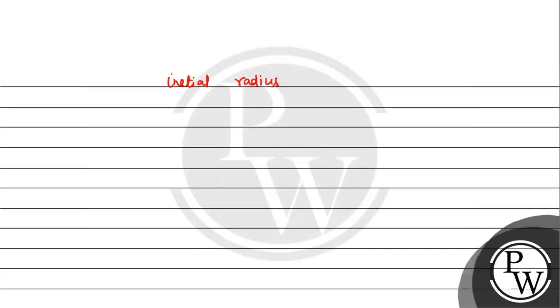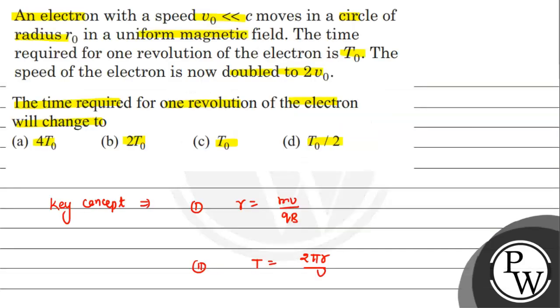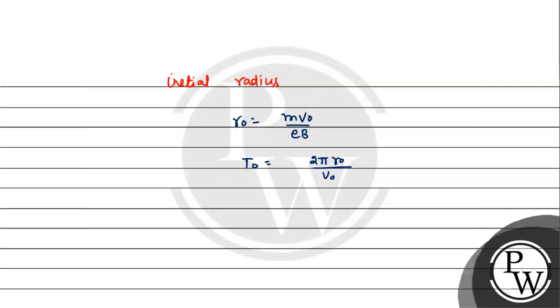The initial time period T0 = 2πr0/v0. Putting r0 = mv0/(eB), we get T0 = 2πr0/v0. When we substitute and cancel, this becomes 2πm/(eB).